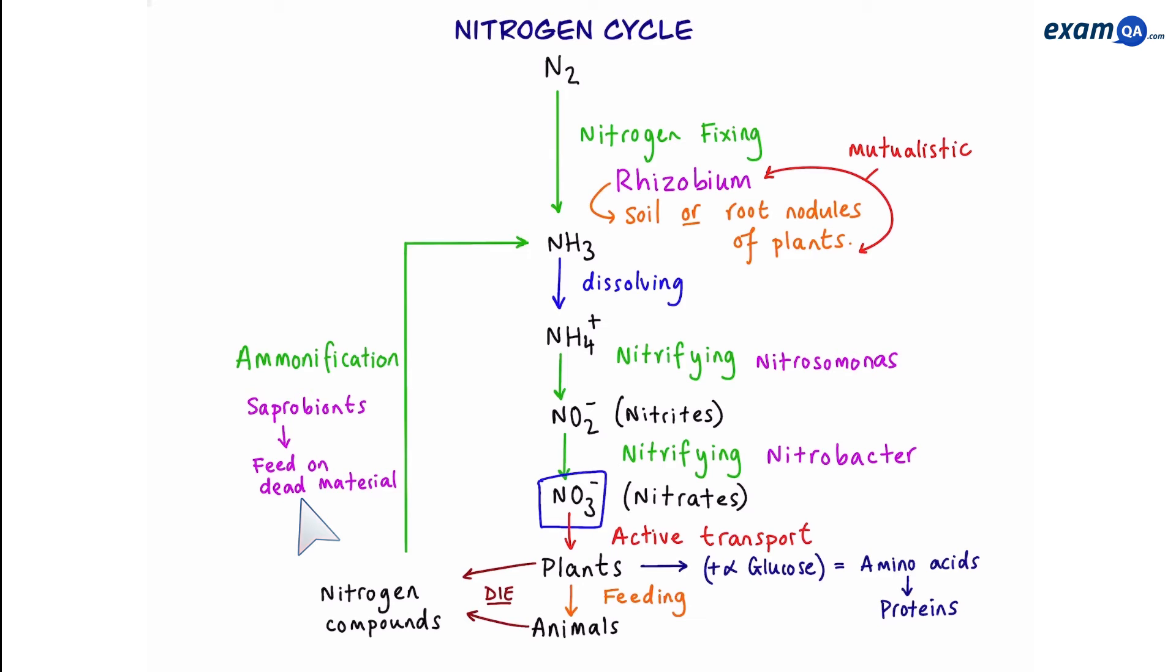Okay, almost finished. Now there's one more bacteria that we have to mention. Nobody's really a big fan of them because they convert nitrates back into nitrogen gas. And this process is called denitrification. So all that hard work to make nitrates and then they get converted back into nitrogen gas by denitrifying bacteria.